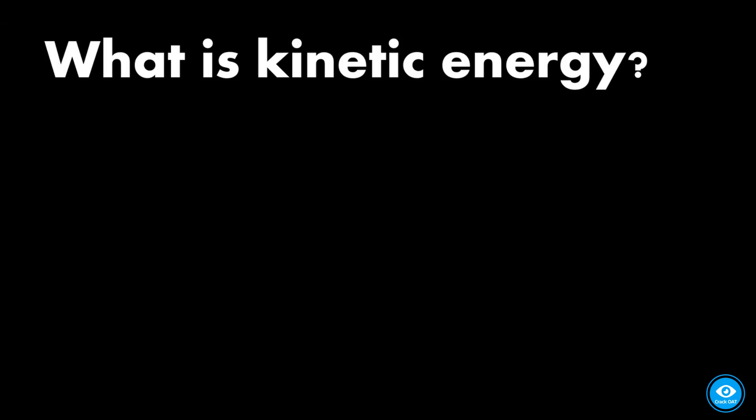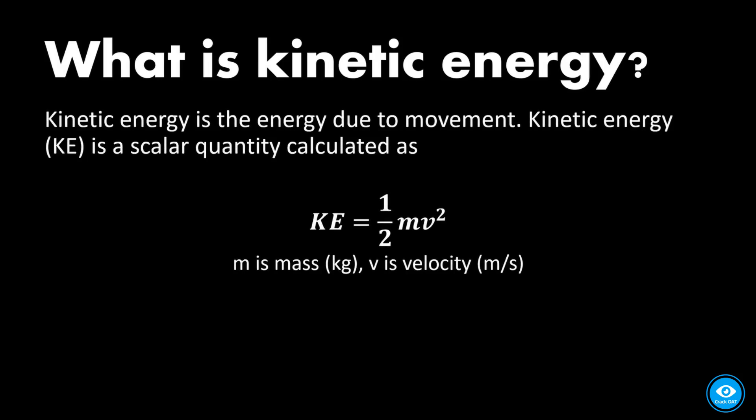So first, what is kinetic energy? Well, we've discussed that kinetic energy is the energy due to some object in motion. And it's a scalar quantity, it's not a vector quantity. It's just a number, it doesn't have a direction. And its equation is one-half mass times velocity squared. And its units are in joules because it's a type of energy.